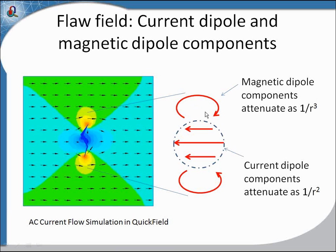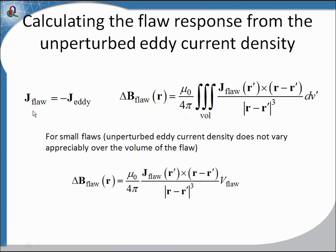This current density can be more accurately represented as a current dipole opposing the direction of the current, as well as a magnetic dipole component around the edges of the dipole. It turns out that the current dipole components will attenuate — the magnetic field will attenuate as one over R squared — whereas the magnetic field of the circular bits at the edges attenuates as one over R cubed. So the current dipole approximation works well for smaller flaws; for a very large flaw, approximating it as a current dipole would be less accurate.